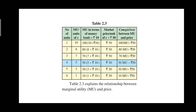Looking at the table: the first Golgappa gives 10 utility, the second gives 8, the third gives 7, the fourth gives 5 utility, the fifth gives 3 utility, and the sixth gives only 1 utility. Since one unit of marginal utility equals rupees 10, for the first unit with 10 marginal utility: 10 multiplied by 10 equals rupees 100. For the second, 8 multiplied by 10 equals rupees 80.